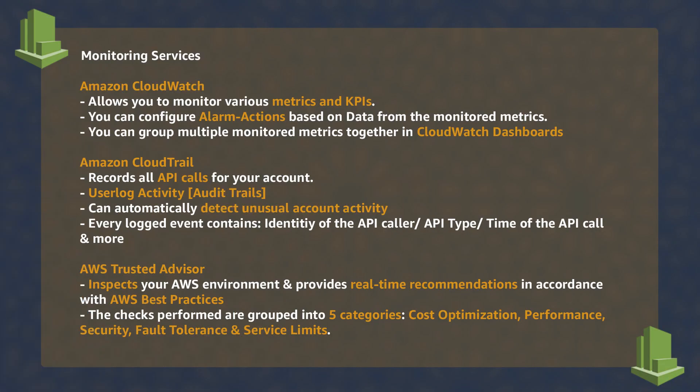Amazon CloudWatch is a monitoring service to monitor the metrics and KPIs of your resources. You can create custom dashboards and group multiple monitored metrics together. You can also configure thresholds to compare the metrics against and configure alarms and actions in case you cross these thresholds.